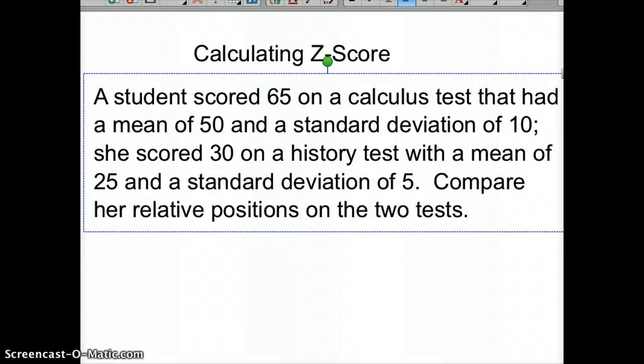A student scored 65 on a calculus test that had a mean of 50 and a standard deviation of 10. That was one nasty test. She scored 30 on a history test with a mean of 25 and a standard deviation of 5. Compare her relative positions on the two tests.